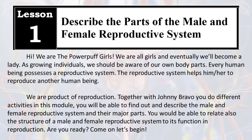Lesson 1: Describe the Parts of the Male and Female Reproductive System. We are the Powerpuff Girls — we are all girls and eventually will become ladies. As growing individuals, we should be aware of our own body parts. Every human being possesses a reproductive system. The reproductive system helps him or her to reproduce another human being. Together with Johnny Bravo, you will do different activities in this module. You will find out and describe the male and female reproductive system and their major parts, and relate the structure to its function in reproduction. Are you ready? Come on! Let's begin!